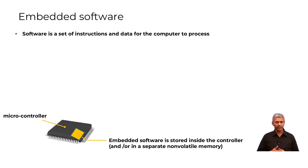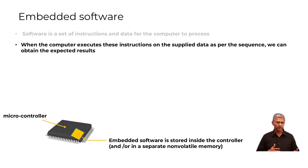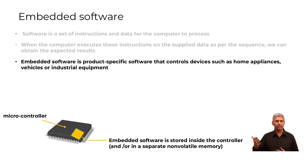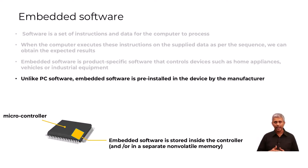Software, to put it simply, is a set of data and instructions for the computer which, when executed by the microprocessor, provides computation results. Embedded software is product-specific software that appropriately controls devices such as home appliances or other industrial equipment. Unlike PC software, embedded software is specifically built for the hardware it runs on and shipped along with the device by its manufacturer.